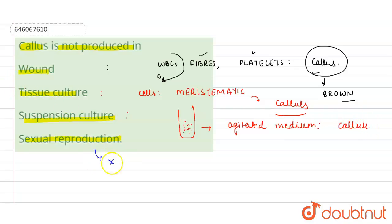But in sexual reproduction, callus is not formed. Rather, a zygote is formed after the combination of the male and female gametes. The zygote is formed, not the callus. So the correct answer will be sexual reproduction.